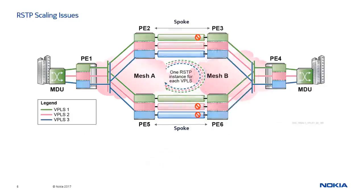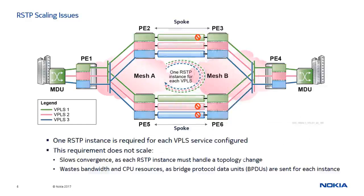One of the major roadblocks to RSTP is the requirement to run a separate instance for each service in the topology. With a large number of VPLS services, running multiple RSTP sessions becomes inefficient because each service would require RSTP configuration and management. In addition, an operational overhead will be added because one Bridge Protocol Data Unit or BPDU is required per RSTP instance. This behavior wastes CPU resources and link bandwidth and also slows down the time it takes to recover from a fault.